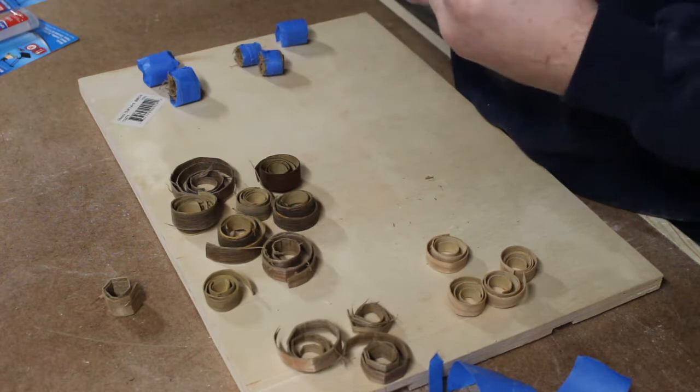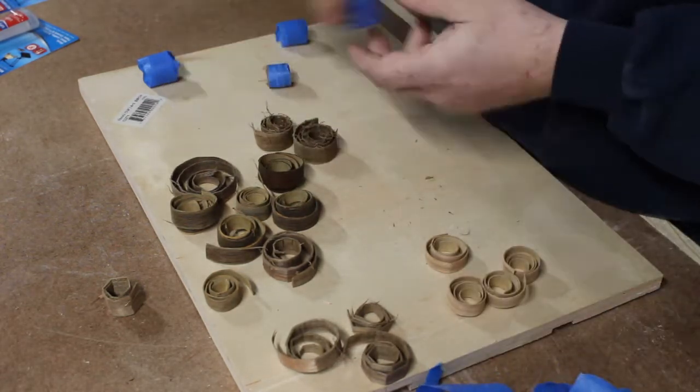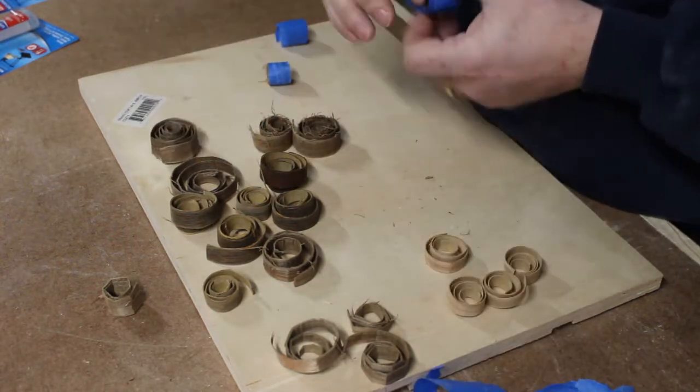Next I sanded the ends of the veneer strips and then tapered them on the end. This helps with sanding later and gives you a nice transition on the inside surface of the ring when you're wrapping them.